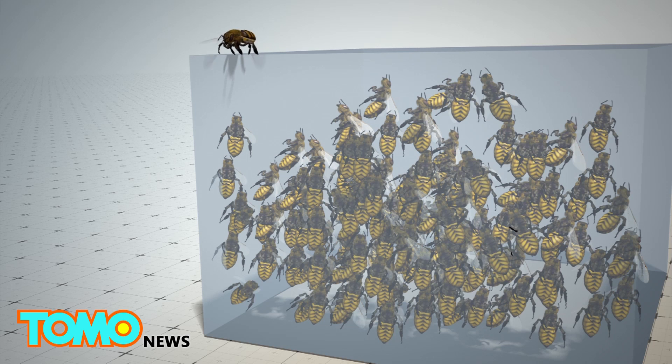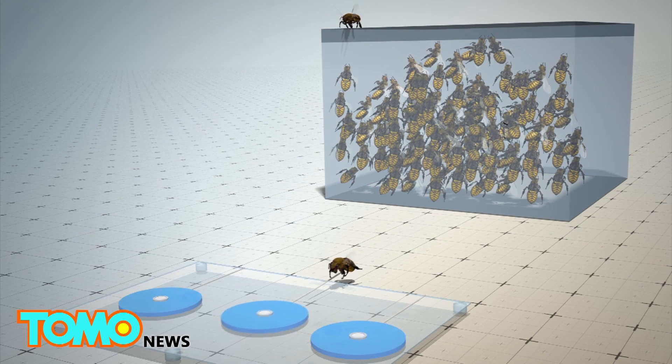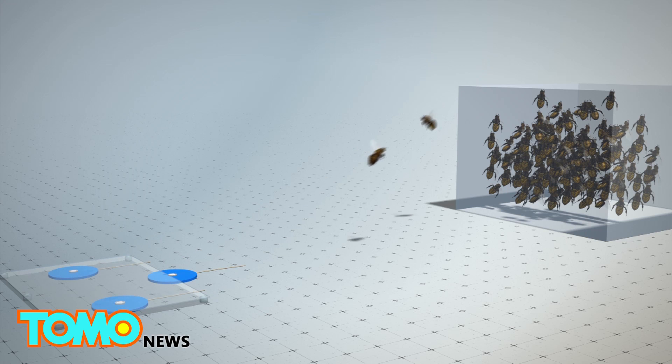In another test, untrained bees were placed behind a transparent wall as they watched another bee retrieve the sugar. When put through the same conditions, 60% of the untrained bees were able to successfully navigate the experiment.